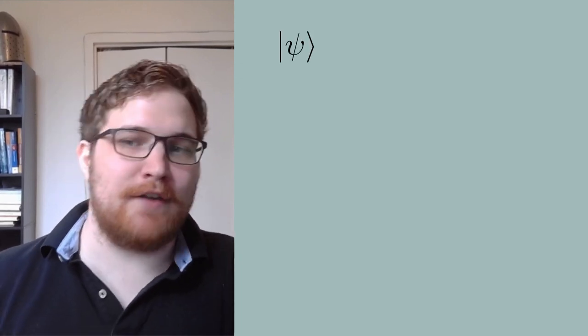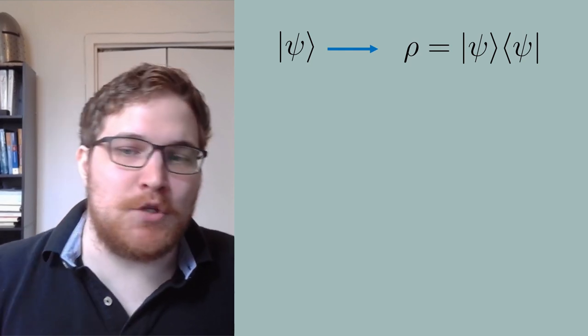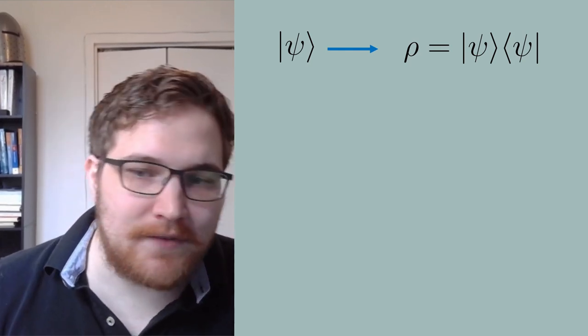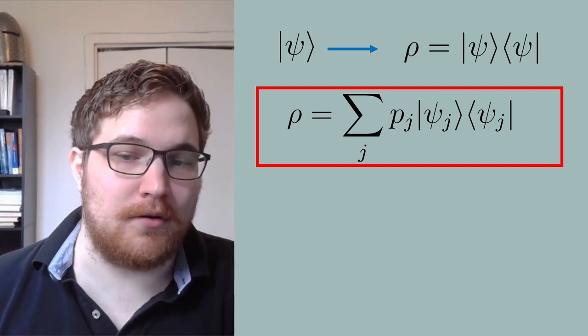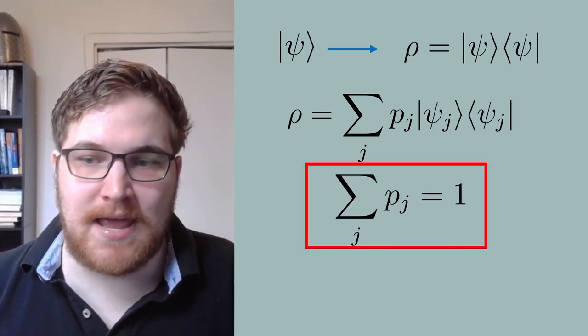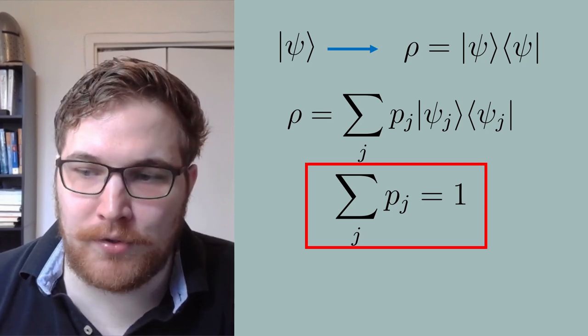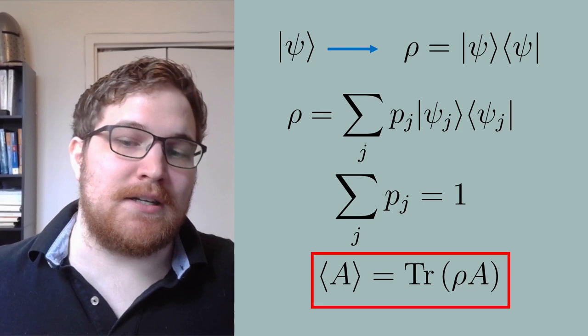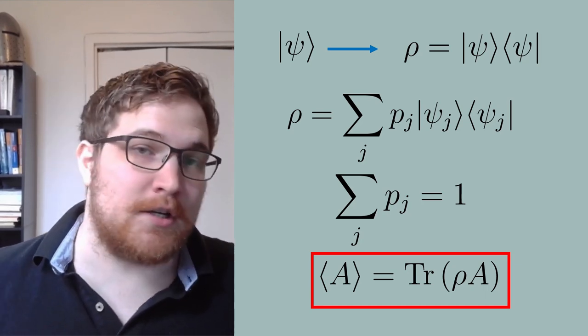I've already introduced density matrices on this channel, so I'll only quickly introduce them here. So far, we have dealt with pure states, written in our ket formalism like state psi. To make our ket into a density matrix, we just take the outer product. A mixed state is one where we are ignorant of what pure state we are in, so we could have some statistical mixture of pure states. The P_J terms in front of the pure states are probabilities, and they all sum up to one. To get the expectation value of an observable, you simply multiply the observable by the density matrix rho and then take the trace. The resulting number is your expectation value for that observable.